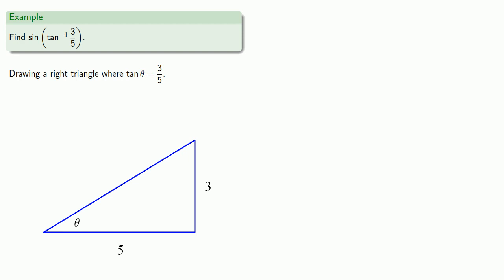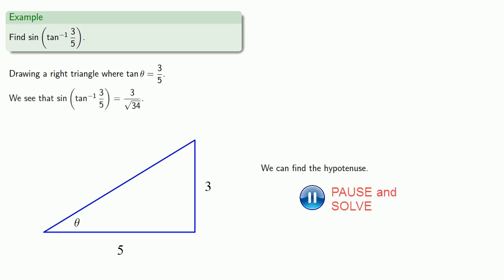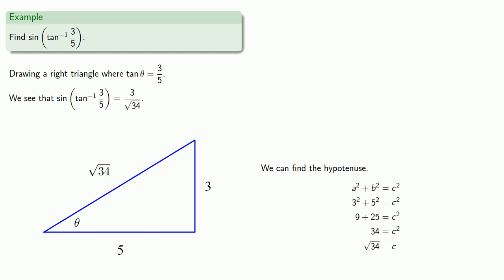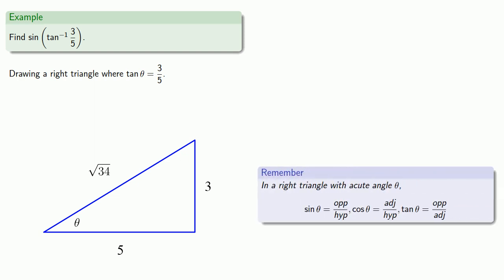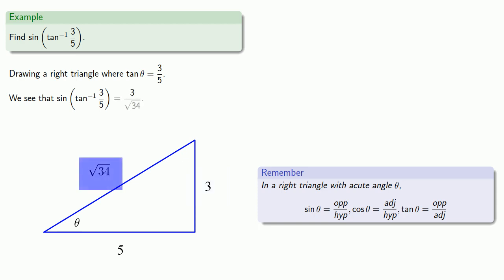This gives us a right triangle and we know two of the side lengths, so we can find the hypotenuse. In our right triangle with acute angle theta, sine is opposite over hypotenuse, cosine is adjacent over hypotenuse, and tangent is opposite over adjacent. Since we want sine, that will be the opposite side, 3, divided by the hypotenuse, square root of 34.